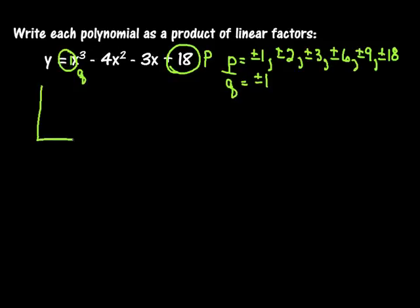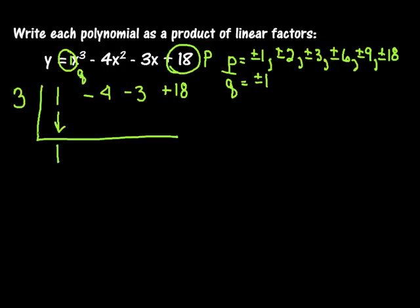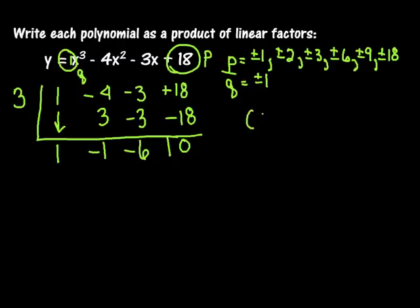I worked ahead and happen to know that positive 3 is one of my zeros. So I'll put 3 in the synthetic division. Coefficients are 1, negative 4, negative 3, and positive 18. Bring the 1 down. 3 times 1 is 3; negative 4 plus 3 is negative 1. 3 times negative 1 is negative 3; negative 3 plus negative 3 is negative 6. 3 times negative 6 is negative 18; add down and I get my magical 0. So 3 is confirmed as one of my roots.